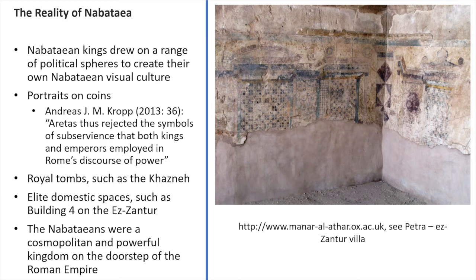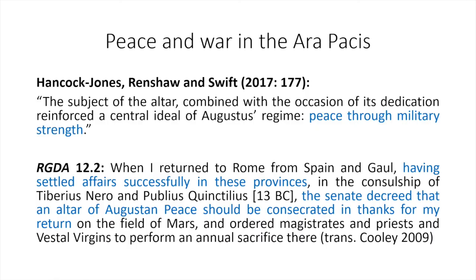If we take all of that knowledge and go back to the Res Gestae, we can appreciate the text in a new way. Perhaps precisely because of this cosmopolitan and powerful nature of the Nabataeans and surrounding peoples, Augustus is very deliberately trying to claim success in that area. This goes against the discourse Augustus wants to stress in the Res Gestae — that Rome is the dominant power and that he personally has expanded the empire for the Roman people — and we can continue to consider these themes of war and peace by looking at the next case study: the Ara Pacis.